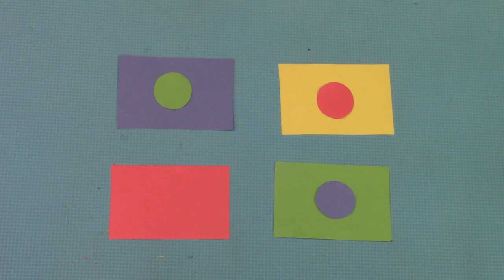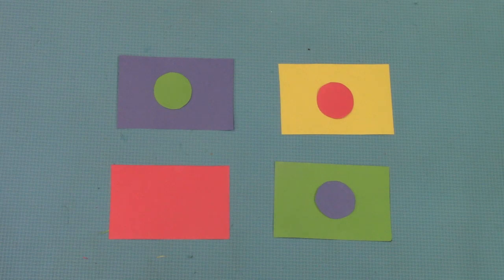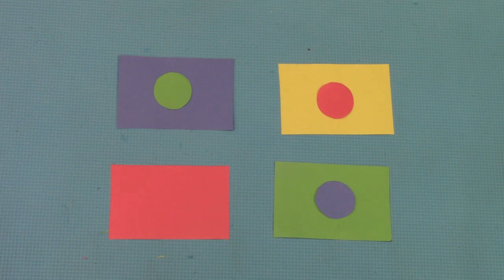Which shape did I take away? Tell me three things about that shape. What color was it? Yes, it's yellow. What shape? Circle. What size? Small.